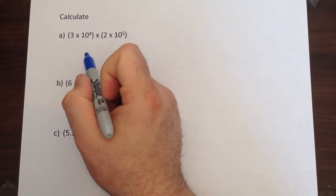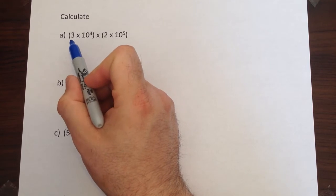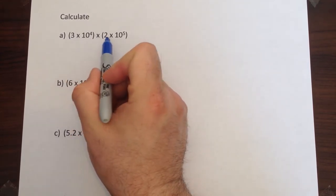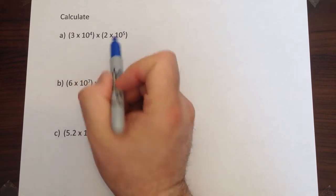Multiplying numbers in standard form is really pretty straightforward. You just need to deal with it as two separate numbers. First you look at the number part and secondly you look at the index part.